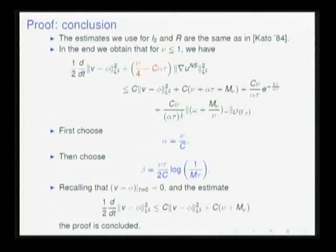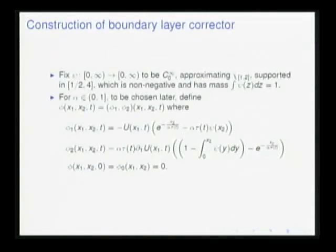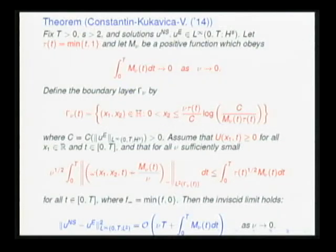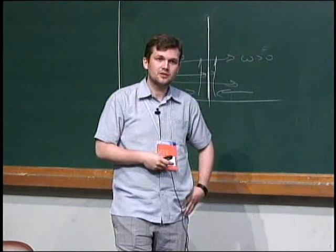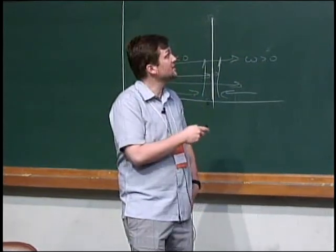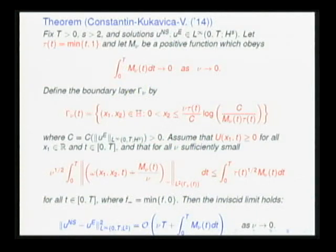That was the theorem, but it has a caveat. It would be great to make assumptions on initial data rather than on solutions of Navier-Stokes. This is still a theorem in the spirit of Kato — if the Navier-Stokes solution does something, then it converges to Euler. The initial motivation of finding a space X for the data that implies the inviscid limit does not seem to carry over to the Oleinik setting so far. Establishing this bound from, say, positive vorticity initial data is, as far as I know, open. And with that, I would like to conclude.